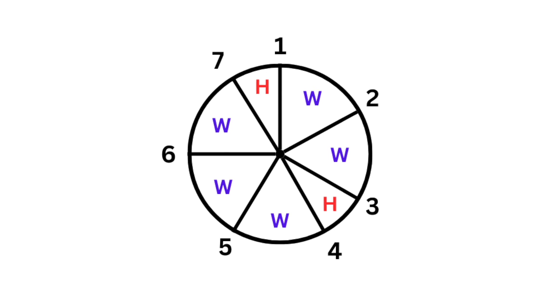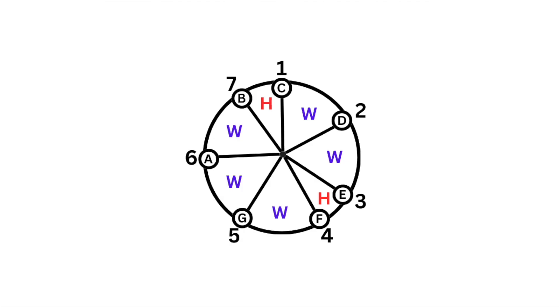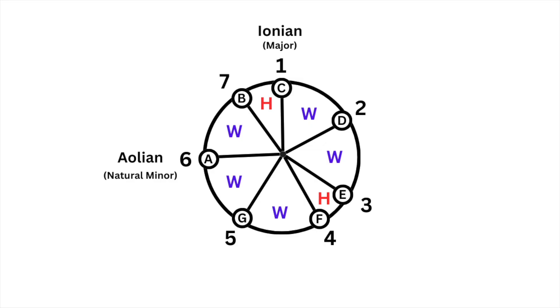All of the modes of the major scale are based on this same pattern — they just start and end at a different point. If we start at the point labeled one and play from there back to one again, we get the Ionian mode, or the major scale. If we start on the sixth degree, which is A, and play from A to A, this is the Aeolian mode, or the natural minor scale.